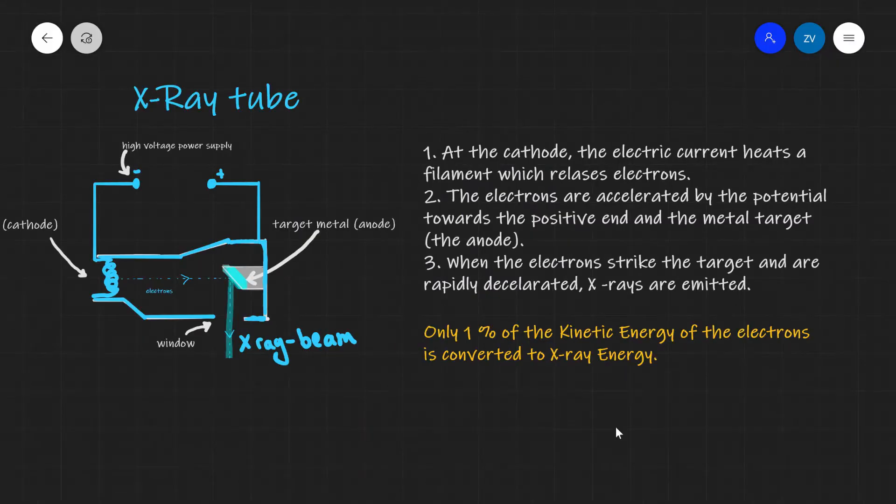Now let's summarize what we have just said. Once again, at the cathode, also known as the heater, the electric current heats a filament. This releases electrons. The electrons are then accelerated towards the target metal, the anode. They're accelerated by the potential towards the positive end. And when the electrons strike the target, they're rapidly decelerated, they rapidly lose energy and x-rays are emitted.